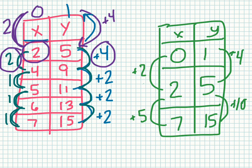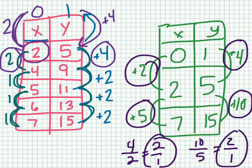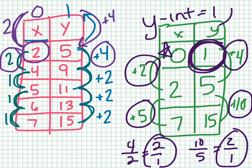So, 4 over 2, that's 2 over 1. And 10 over 5. Okay, so I still have the same rate of change. But now I know that when x is 0, y is 1. So, my y intercept equals 1.